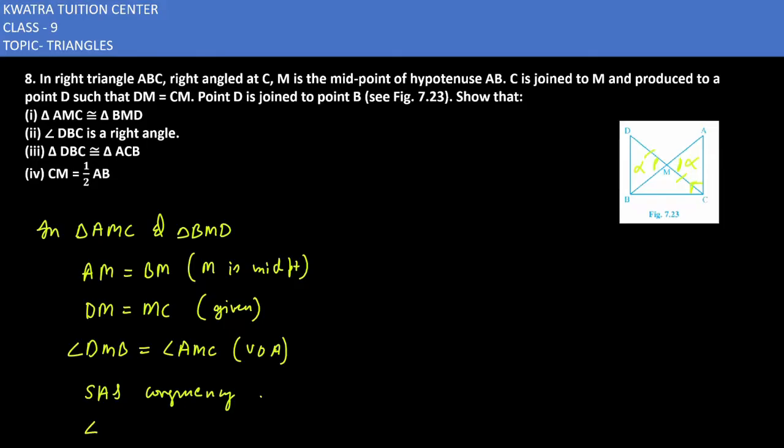By CPCT, we can write that corresponding angles are equal. Because when we have two congruent triangles, then corresponding angles are equal to each other.